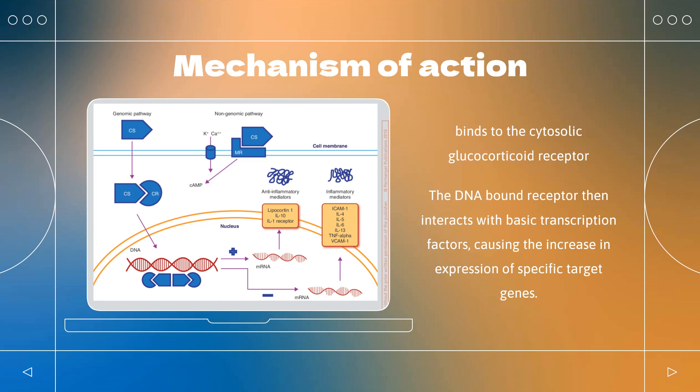The anti-inflammatory actions of corticosteroids involve lipocortins, phospholipase A2 inhibitory proteins, which, through inhibition of arachidonic acid, control the biosynthesis of prostaglandins and leukotrienes.